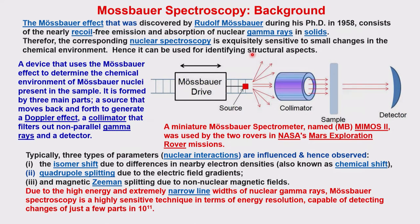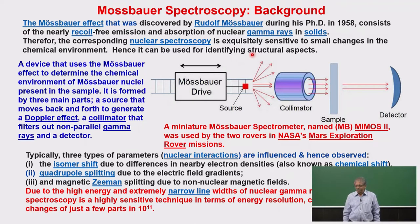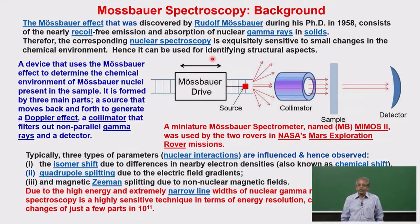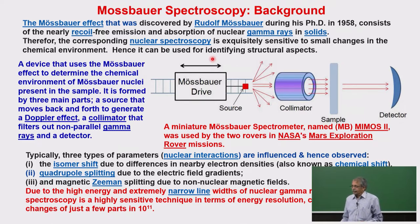The word Mössbauer comes from the name of a person — Rudolf Mössbauer — who was basically a PhD student at the time when he invented this, during the late 1950s, specifically 1958. He identified that you can bring about absorption and emission of a gamma ray, or a nuclear transition, without much recoil effect. It is basically referred to as recoil-free.